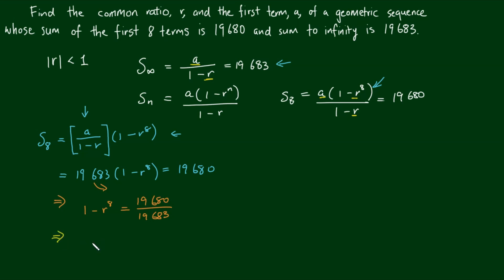And if we make r to the power of 8 the subject, we'll have r to the power of 8 is equal to 1 minus 19,680 divided by 19,683.